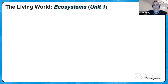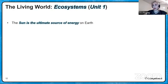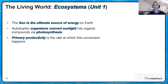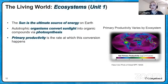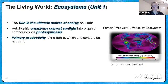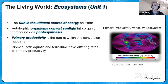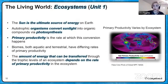The sun is the ultimate source of energy on Earth. Autotrophic organisms convert sunlight into organic compounds such as glucose via photosynthesis. Primary productivity is the rate at which this conversion happens, and it varies by ecosystem. Some areas, like the Amazon, are very high in net primary productivity, while others like the Saharan area are very low. Both aquatic and terrestrial biomes have differing rates of primary productivity, and the amount of energy that can be transferred through the trophic levels depends on the rate of primary productivity in that ecosystem.